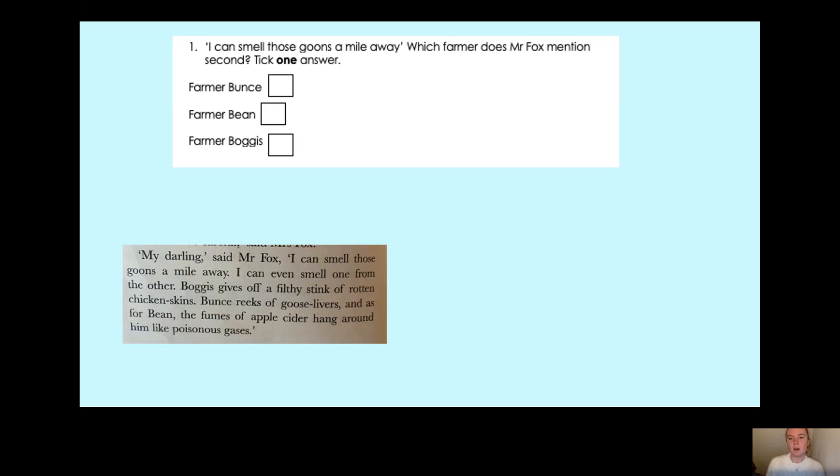So which farmer is mentioned first? Boggis gives off, it's farmer Boggis that's mentioned first. I can even smell one from the other. Boggis gives off a filthy stink of rotten chicken skins. So we can't tick farmer Boggis because he is first. We need the person that's mentioned second, so it's going to be the person that's mentioned after Boggis.